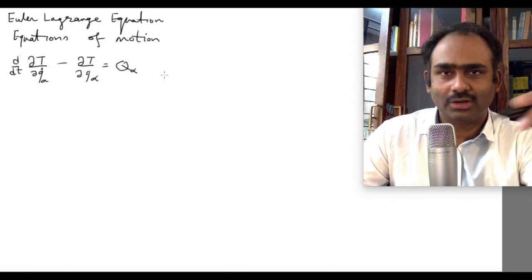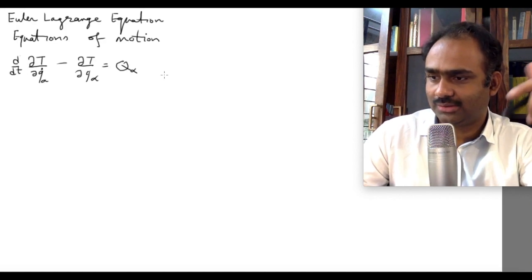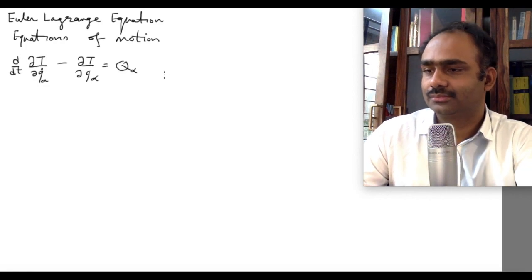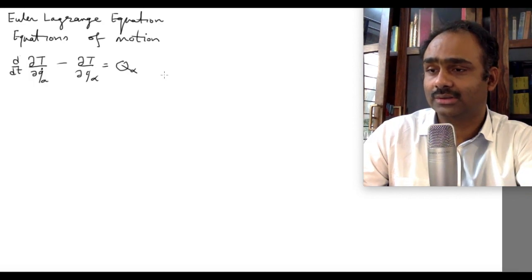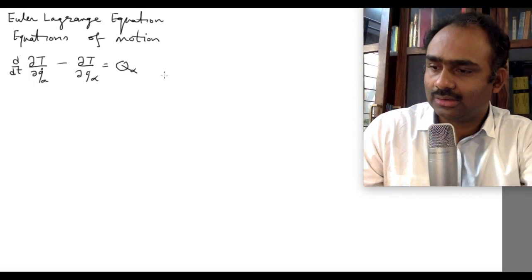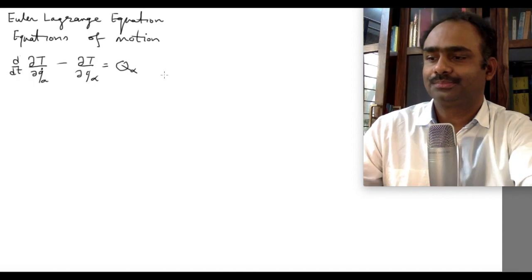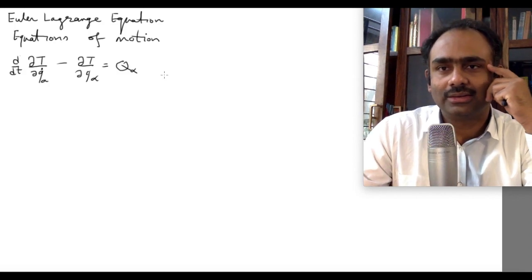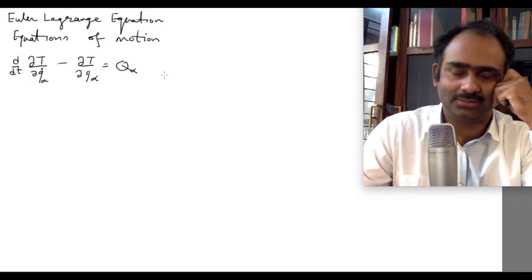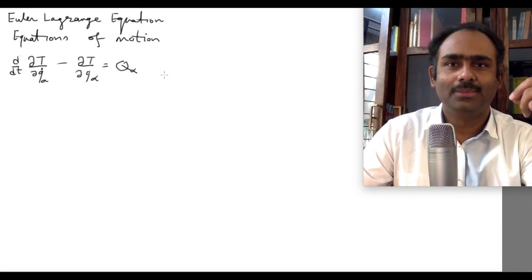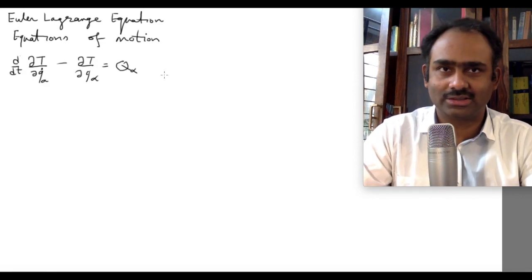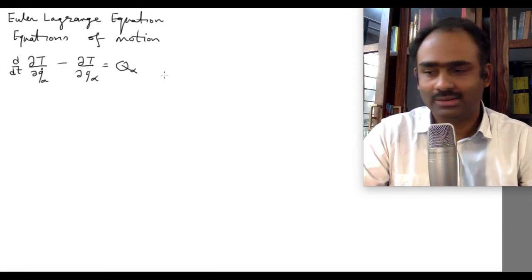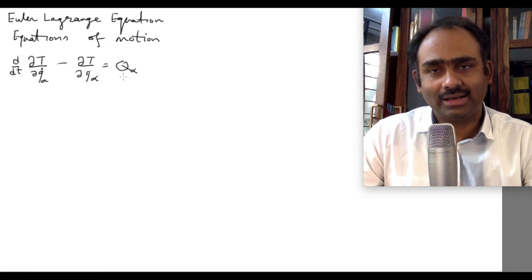On the right hand side we have Q_alpha, which we wrote down explicitly last time as the sum over i of F_i dotted with ∂r_i/∂q_alpha. Now let us assume that all the forces acting on the system are conservative, meaning we can express those forces as the gradient of some scalar potential. So we can write down a potential energy which is a function of all coordinates r_1, r_2, ..., r_N, and express the F_i's as gradients of it.